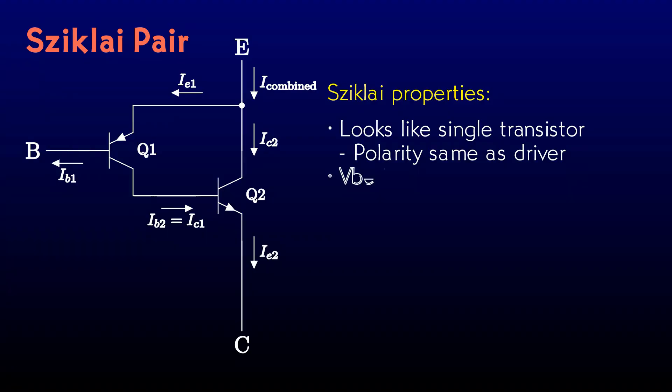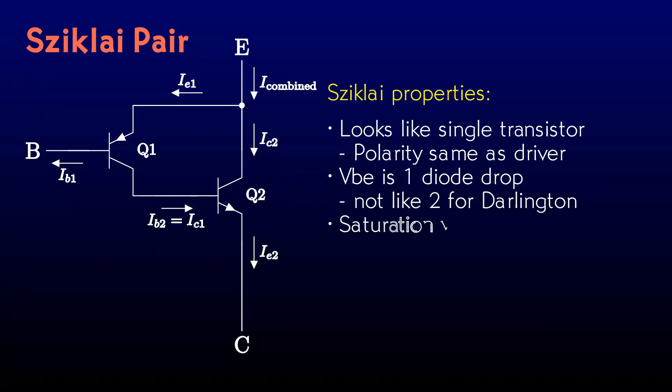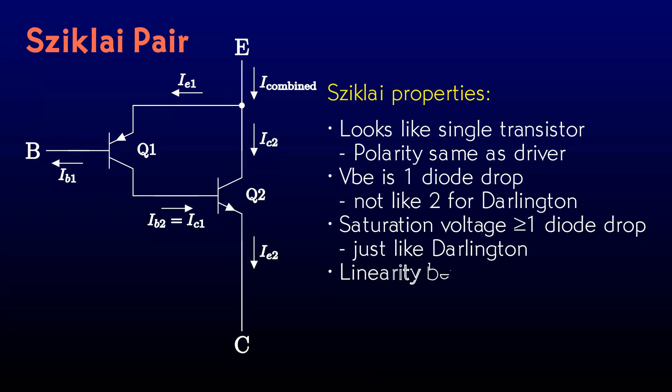One advantage of the Sziklai for push-pulls is that its base emitter voltage is just one diode drop. Not the two that the Darlington has. Don't confuse this with the collector-emitter saturation voltage. That's still got an extra diode drop, the same as for the Darlington. In a push-pull amplifier, it's easier to get better linearity, because there will be a diode less crossover distortion.